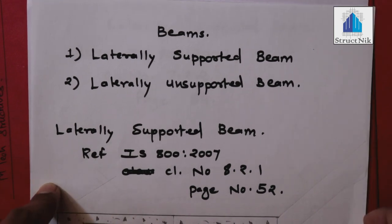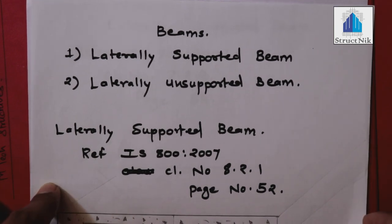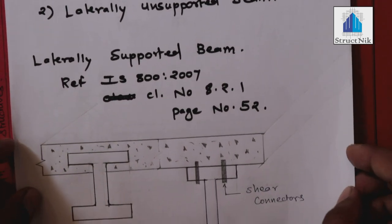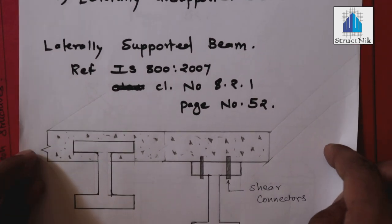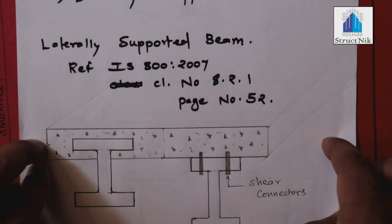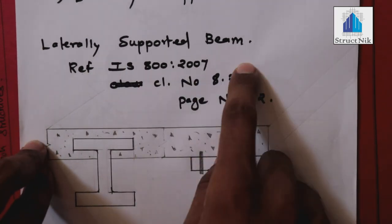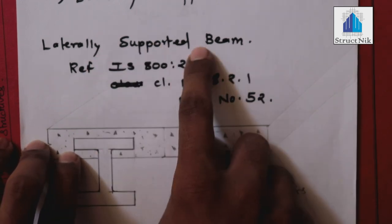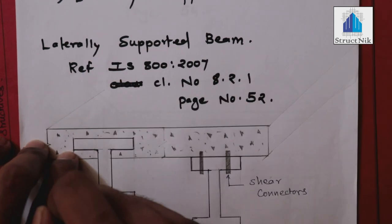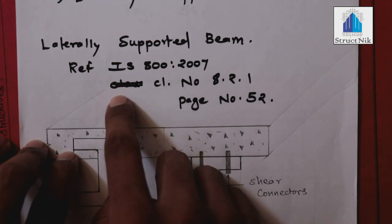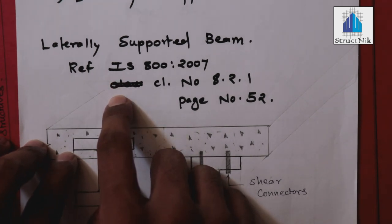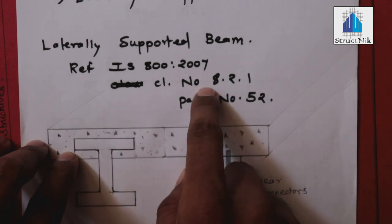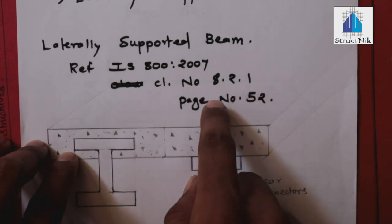Laterally supported and unsupported — what are they and how are they different? We have to look at this. For the laterally supported beam, we have to refer to IS800, clause number 8.2.1, page number 52.